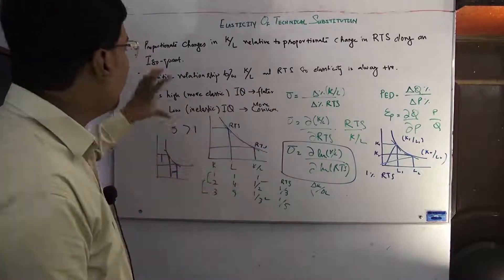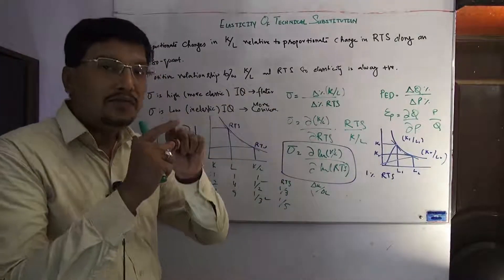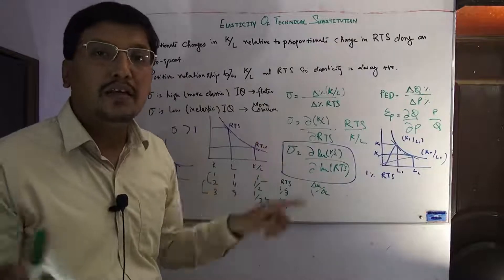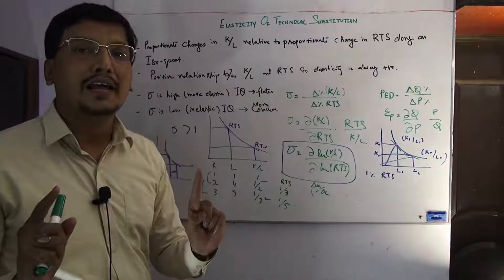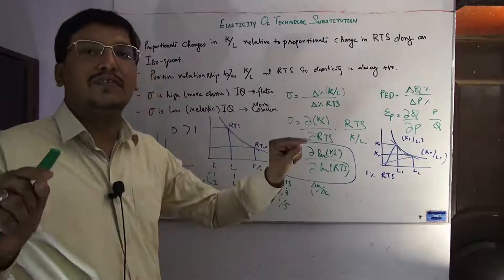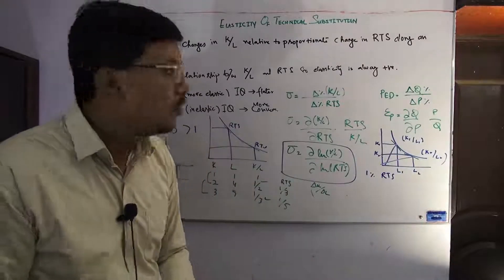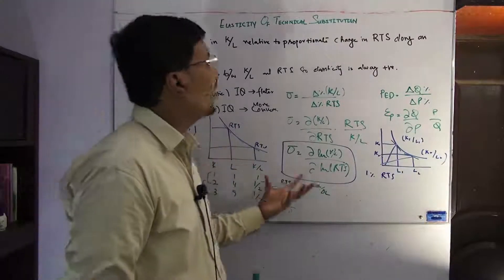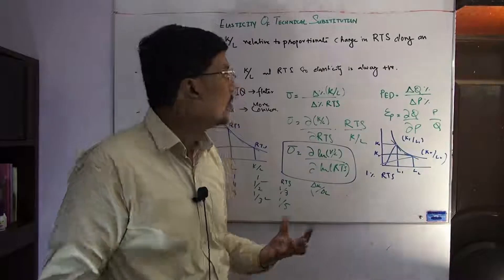So this is all about the elasticity of technical substitution. To summarize: if the isoquant looks flatter, the elasticity will be high; if the isoquant looks more convex, then the elasticity is low. I hope you learned about it.